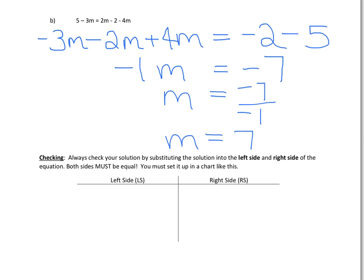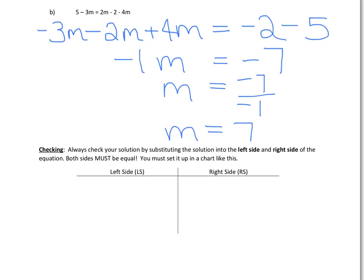Now, like we talked about yesterday, we're going to make this process more official — we should always be able to check our answer. The way we check our answer is we take m equals 7 and substitute it into both the left-hand side and the right-hand side of the equation. We're going to do this algebraically. You must set it up in a chart exactly like this. The left-hand side of the original equation was 5 minus 3m, and the right-hand side was 2m minus 2 minus 4m.